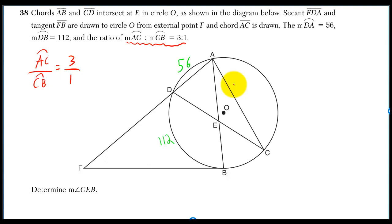Chords AB and CD intersect at E in circle O, as shown in the diagram below. Secant FDA and tangent FB are drawn to circle O from external point F, and chord AC is drawn. None of that shit is necessary.